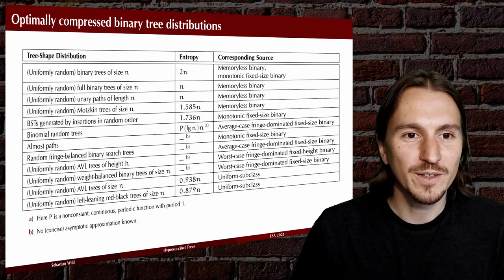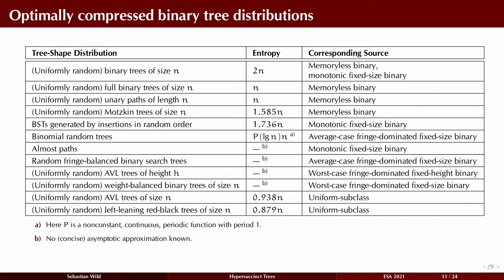From the computer science perspective, here is a list of concrete distributions over binary trees expressible in the language of these sources. For example, random binary search trees — where we start with a random permutation and insert elements in random order — can be represented as a monotonic fixed-size source and we can optimally compress them. Similarly, uniformly random weight-balanced binary search trees can be expressed as a fringe-dominated fixed-size binary tree source, and again we get optimal compression. Here the entropy is not known, but whatever it is, we will meet it in expectation.